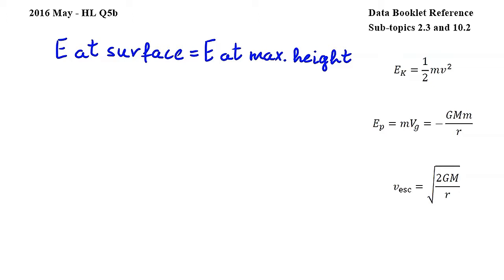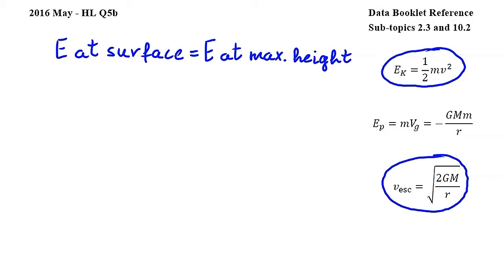Let's start by expressing the total energy of the probe at the surface of the planet. At this point the probe has kinetic energy and gravitational potential energy. To express the kinetic energy we will use this equation from subtopic 2.3 and this equation from subtopic 10.2. Here EK is kinetic energy, lowercase m is the mass of the probe, V is the speed of the probe, and V_esc is the escape speed.